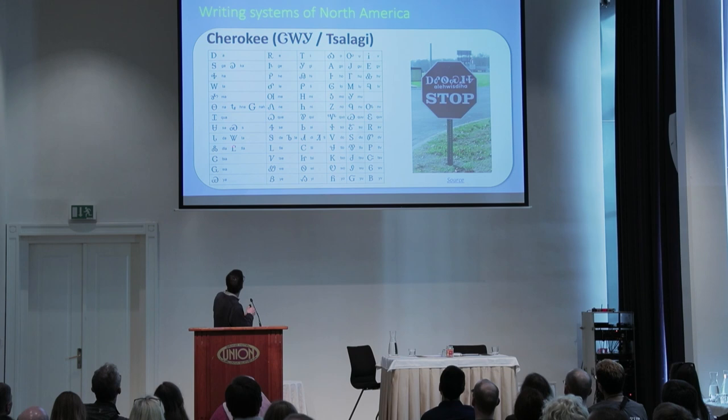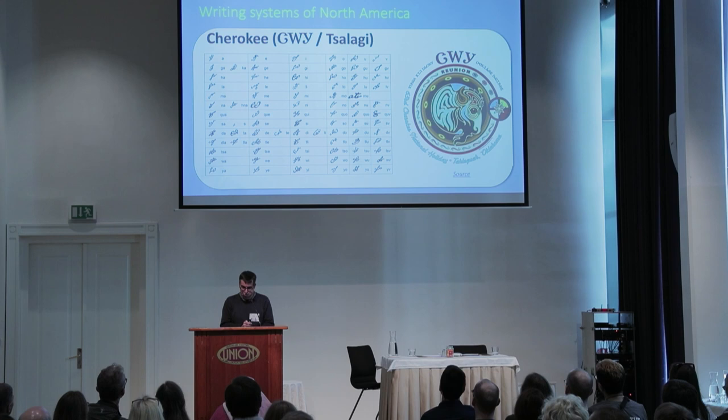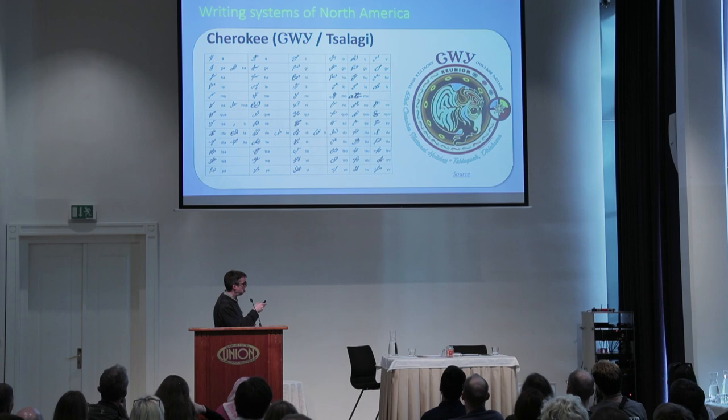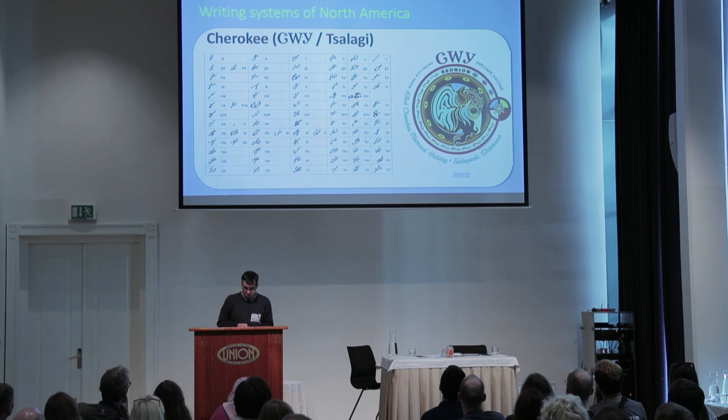Moving further north — this is an example of the cursive version of the Cherokee script, and this is the seal of the Cherokee Nation in Oklahoma showing how it is used.